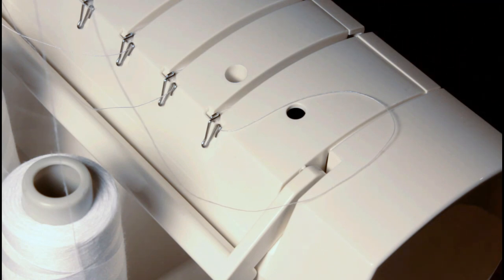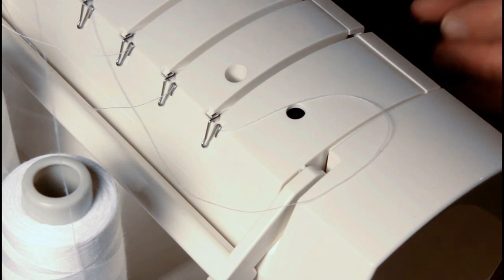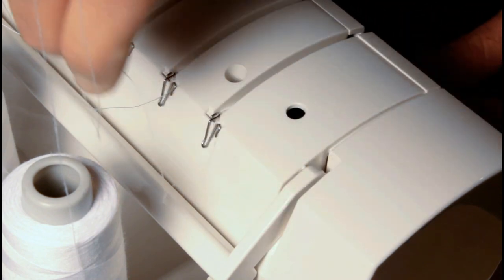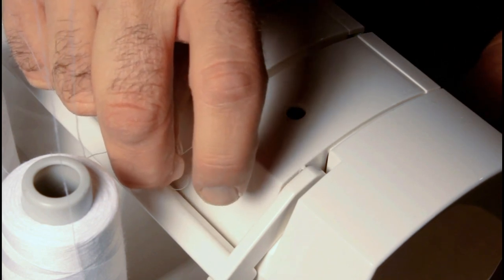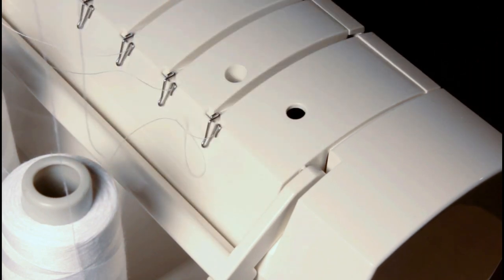The only other thing, make sure the foot's up when you're threading the machine. That will release the tension disc. And then when you come down through the tension disc, put a little tension on it so it will lock down in there, and then go ahead and feed through your loopers and your needles. And that will give you a good idea on how to get started.